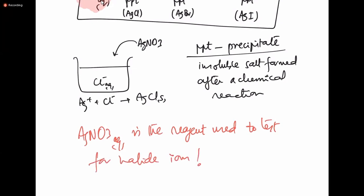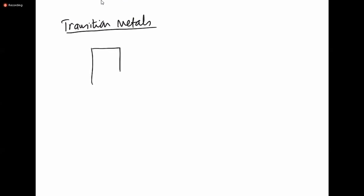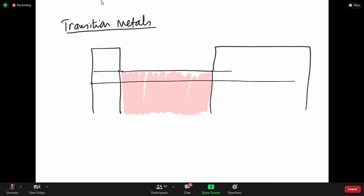Now let's look at transition metals. Transition metal elements lie between group 2 and group 3 of the periodic table. This whole block is transition elements, and it starts from period 4.